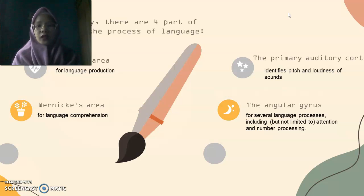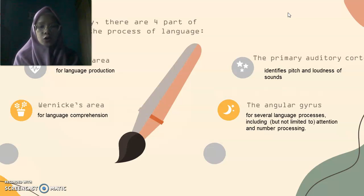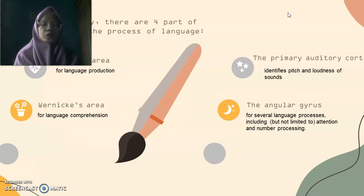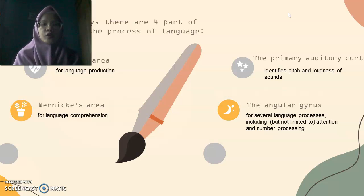Next, the last area is the angular gyrus. The angular gyrus is located in the parietal lobe of the brain. It is primarily responsible for several language processes, including but not limited to attention and number processing. That's the fourth part of the brain involved in the process of language.